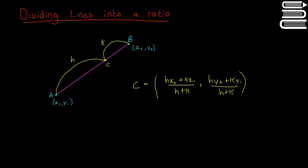So if you want this bit to be bigger, you want H to be bigger, then you can make H bigger than K, or if you want K to be bigger, you can make K bigger than H. And this formula here basically will give a point on the line that will split it up into a given ratio.